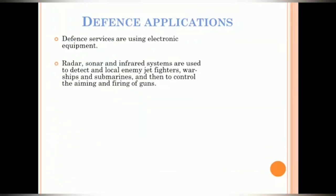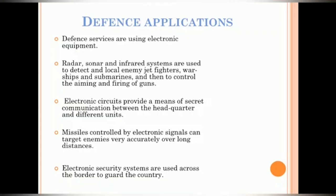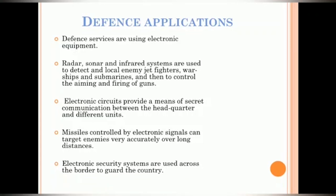The next was defense applications. Defense services are also using electronic equipment. Radar, sonar and infrared systems are used to detect and locate enemy jet fighters, warships and submarines and then to control the aiming of firing of guns. Electronic circuits provide a means of secret communication between the headquarters and different units. Such a communication has become absolutely essential. Missiles controlled by electronic signals can target enemies very accurately over long distances. Electronic security systems are used across the border to guard the country.